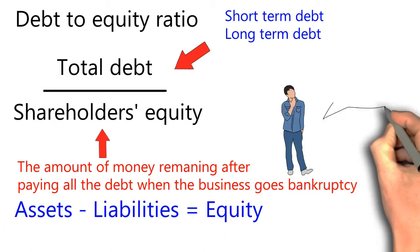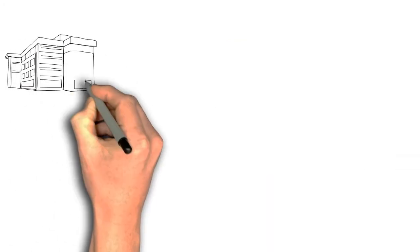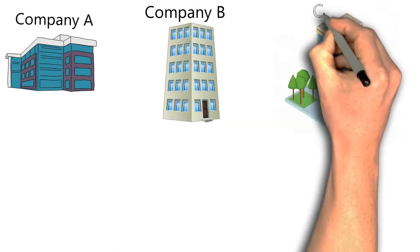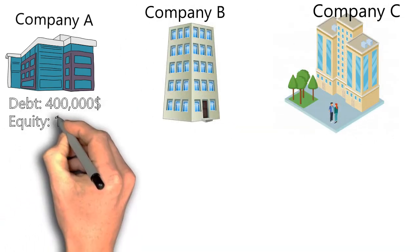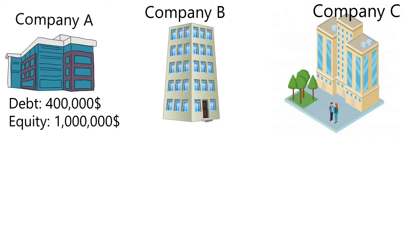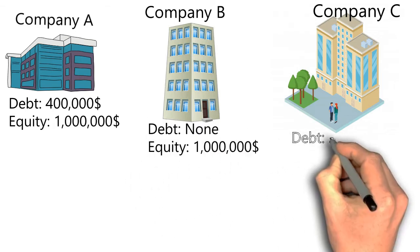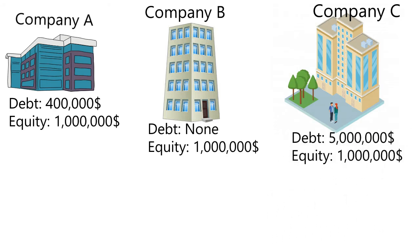How do we use this ratio to evaluate a stock? Consider three different companies: Company A, Company B, and Company C. Company A has total debt of $400,000 and equity of $1 million. Company B has zero debt and equity of $1 million. Company C has a huge debt of $5 million and equity of $1 million.